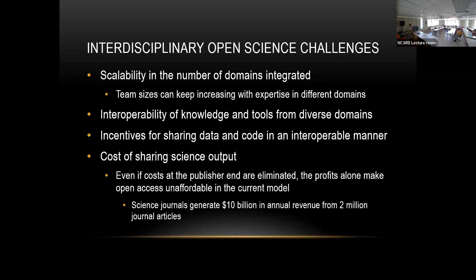There are not many incentives for sharing code and data in an interoperable manner — people do the minimum thing asked of them. You also have scientific knowledge published in papers, but it's not very cost effective. About five companies control a lot of publications, and you get about 10 billion in revenues with 2 million journal articles — roughly 5,000 per article.